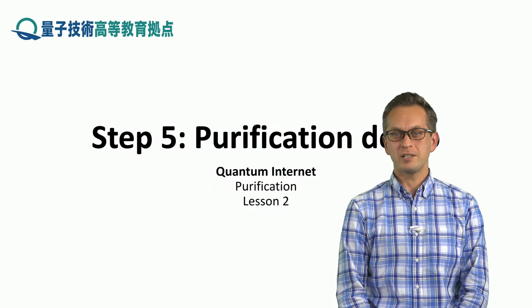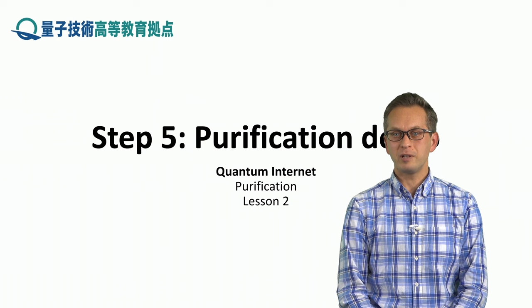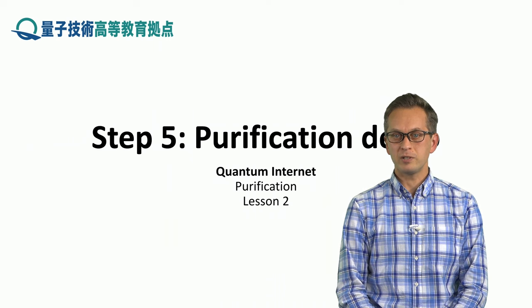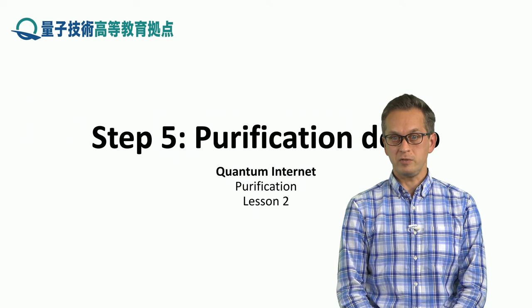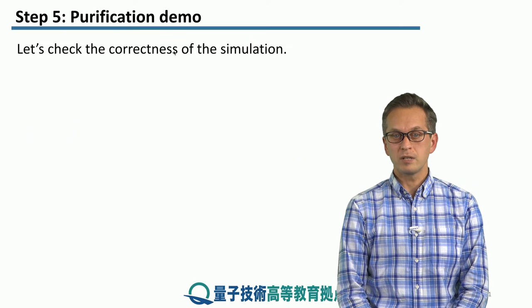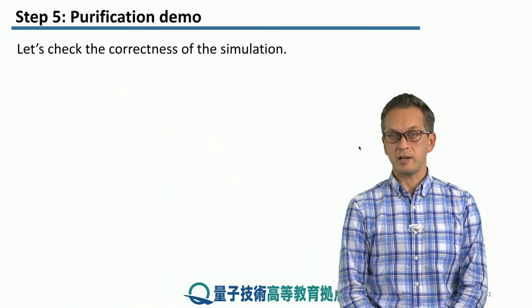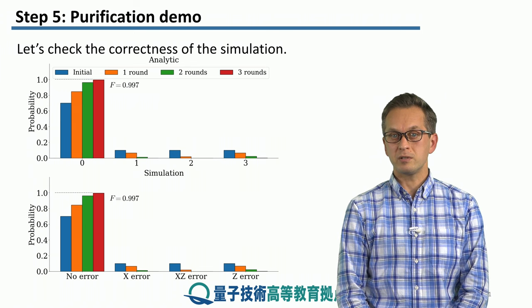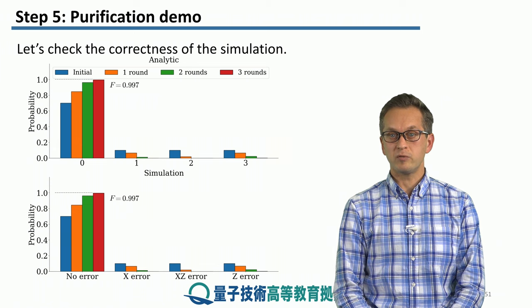Step 5: Purification demo. In this step, we're going to take what we learned in the previous steps and incorporate it into a full-fledged simulation of the purification, including all the sources of noise. First, we would like to check that our simulation is giving us correct answers. The only thing we can compare it with is our analytic result from step 2 for X and Z purification for various numbers of rounds for a Werner state.